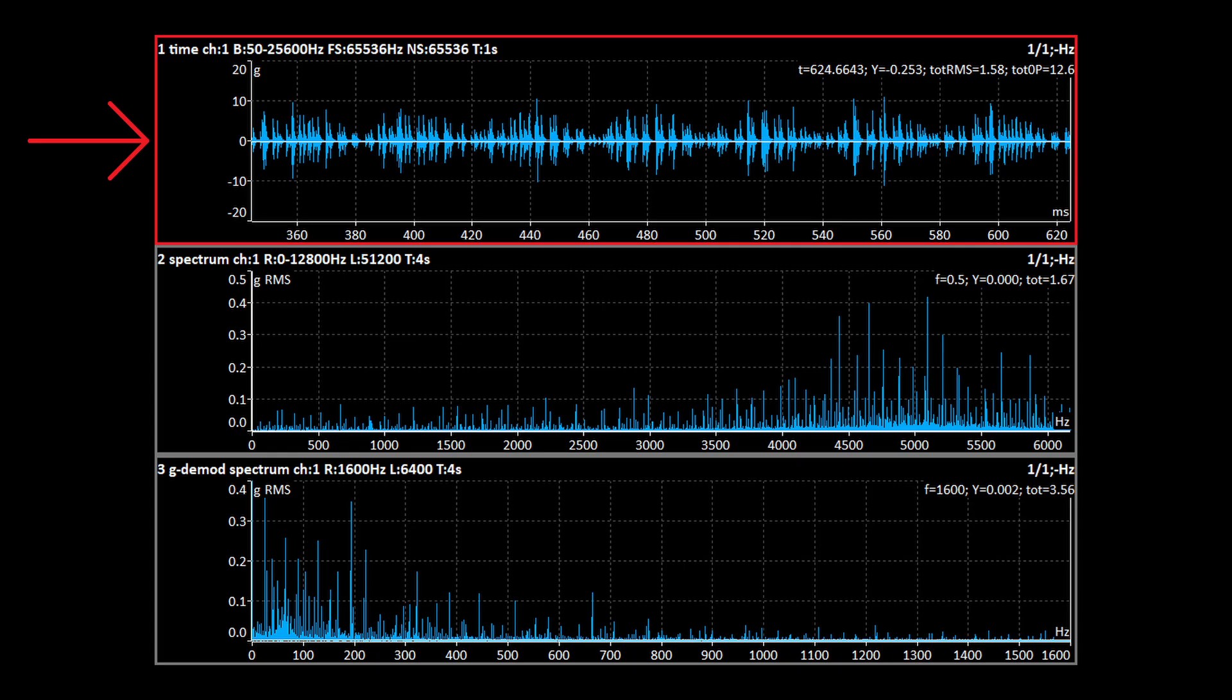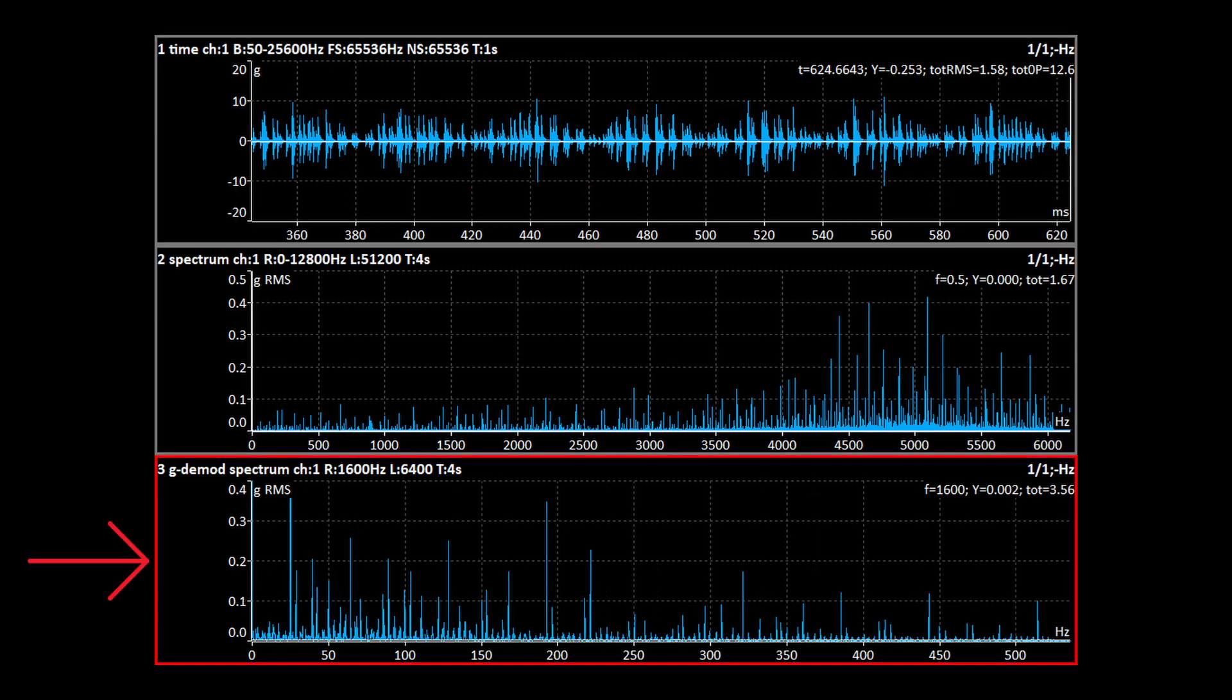We can even see this variability in the time signal. When the sum of the forces is the highest, the shocks are the strongest. When it is the lowest, the shocks are the weakest. Let's zoom into the demodulated spectrum and look for sidebands. Both BPFO and BPFI have sidebands, as do their harmonics.